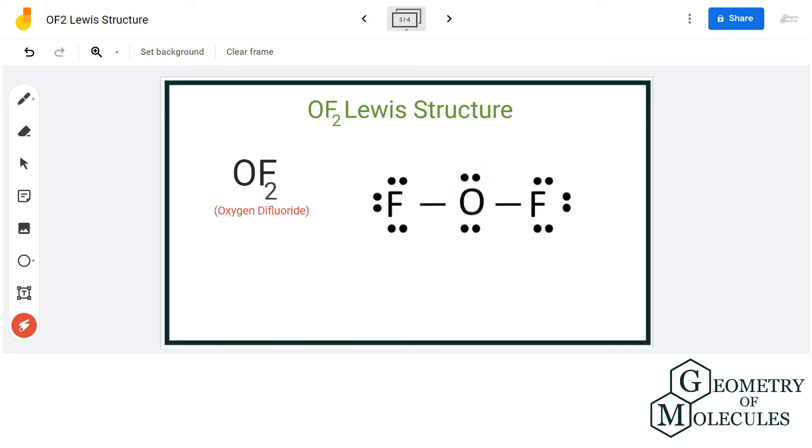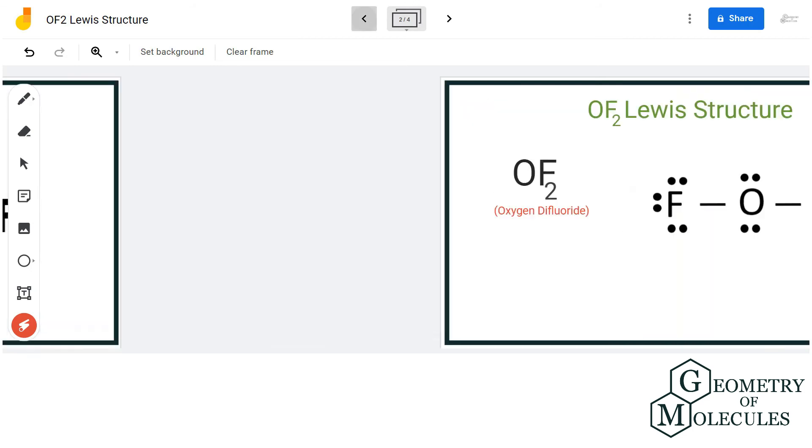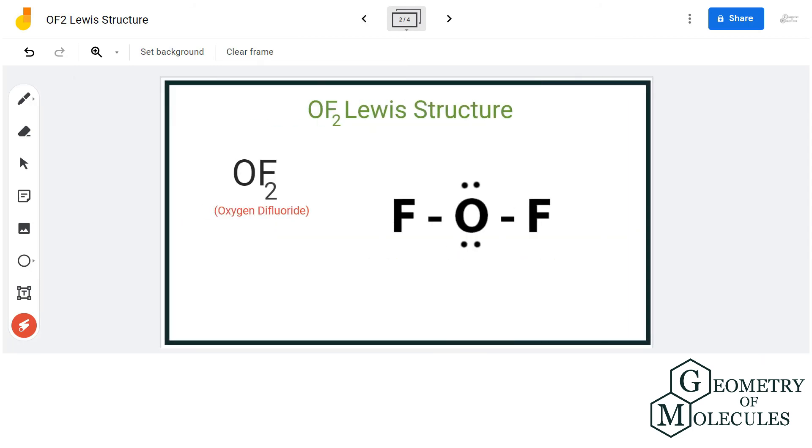So this is the Lewis structure of OF2 in which there is one single bond between each fluorine and oxygen atom with two lone pairs of electrons on the oxygen atom. I hope this video helps you to understand the Lewis structure of OF2.